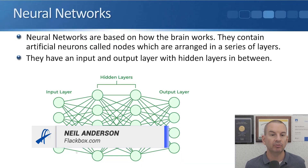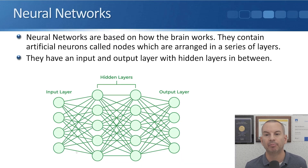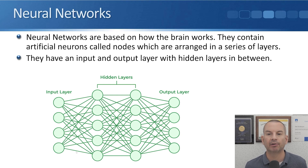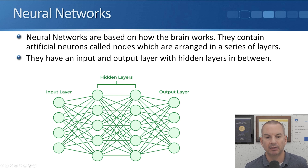In this lecture you'll learn about neural networks and generative AI models. Neural networks are based on how the brain works. They contain artificial neurons called nodes which are arranged in a series of layers. You can see a representation of a neural network here, and we've got a node here which is similar to a neuron in the human brain.